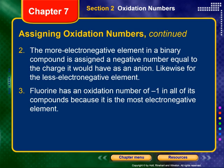Number three: fluorine has an oxidation number of minus one in all of its compounds because it's the most electronegative element. There is no element on the periodic table that is more electronegative than fluorine, and therefore whenever fluorine is in a compound, it is going to pull the electrons involved in bonds closer towards it. Because it's in group 17, it has room for one more electron, and it will always get that one electron.